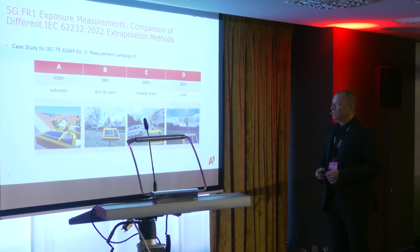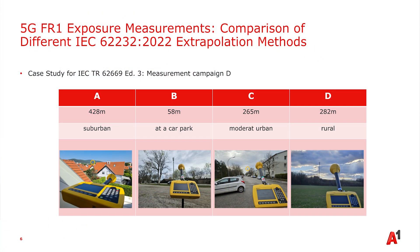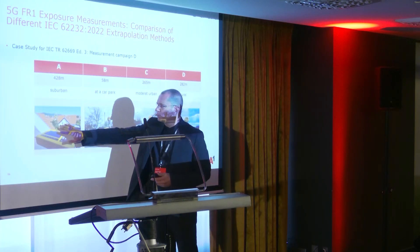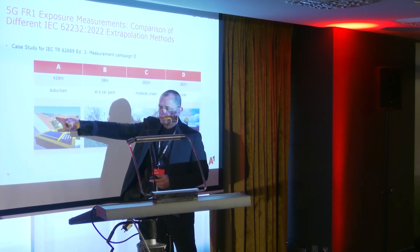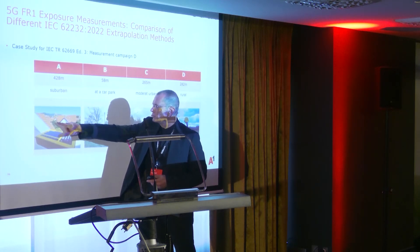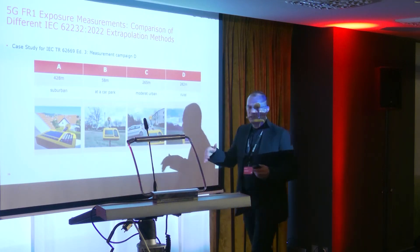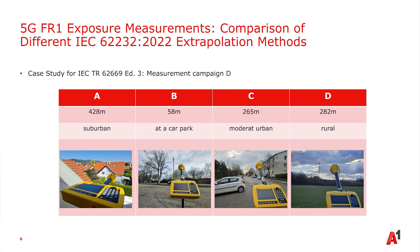This was the case study. I decided to measure four points: one was really far away — more than 400 meters in a suburban area; one relatively near but with a vertical angle on a car park; one in moderate urban; and one in rural areas. One important thing: you can see the antenna — the yellow circle — and you have many many reflecting objects between the base station and the measurement point.